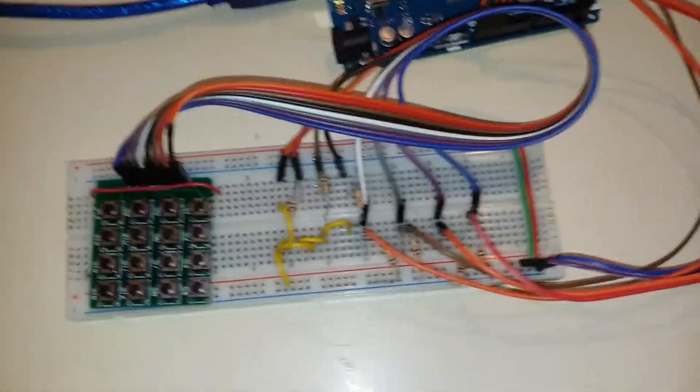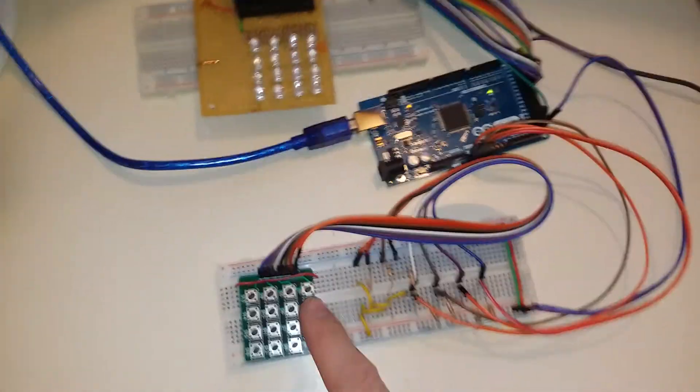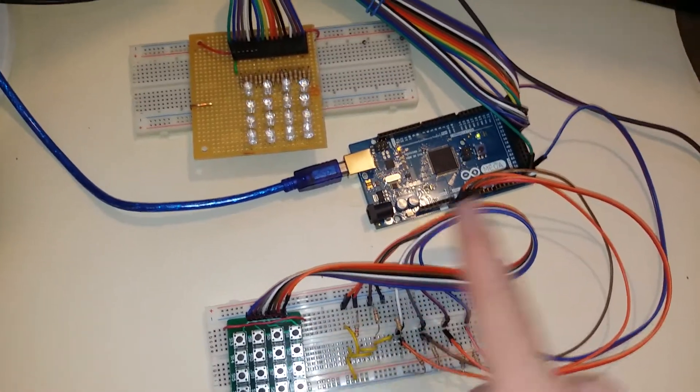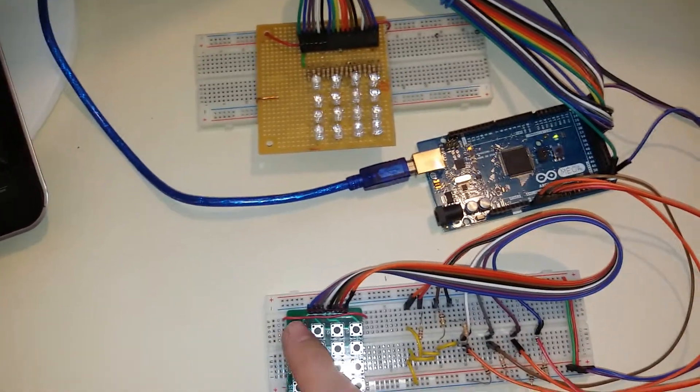So I am going to demonstrate the circuit. Here is my ladder of resistors. Obviously the button matrix comes with some of the basic packages. The Arduino. There is the Arduino Mega. And here is the LED matrix.